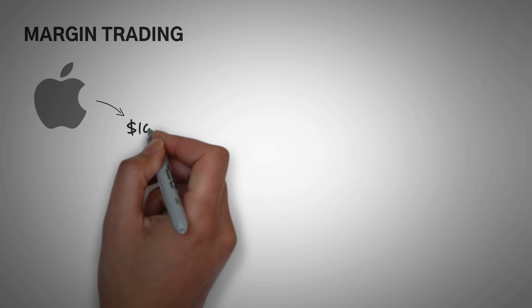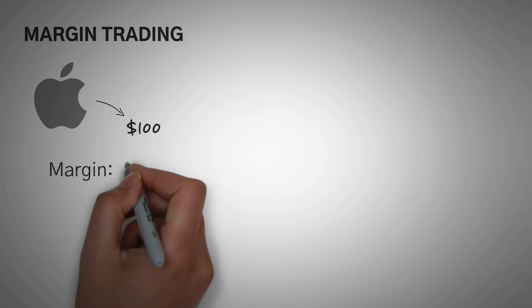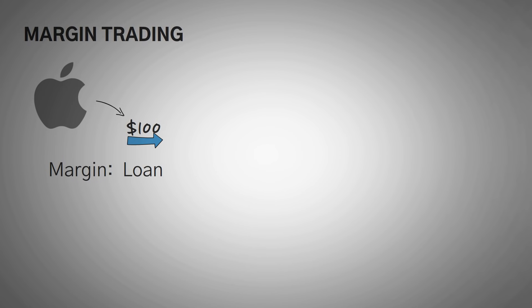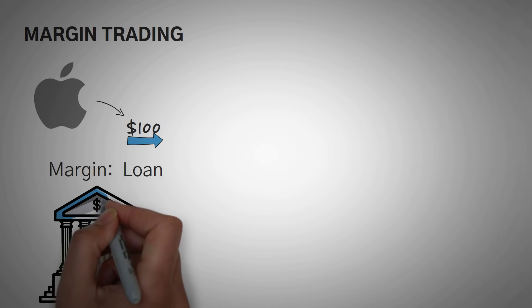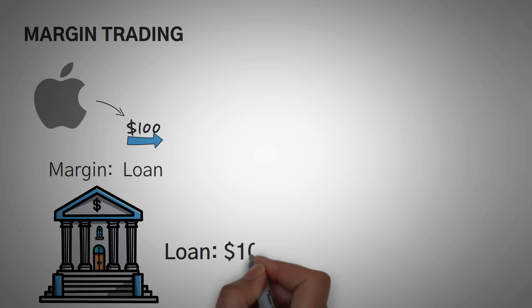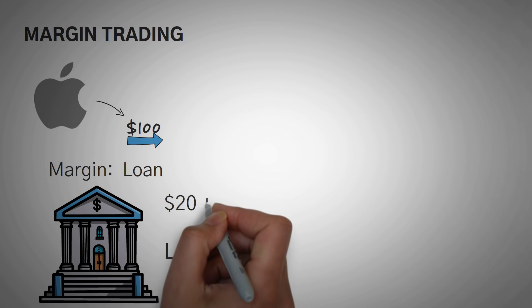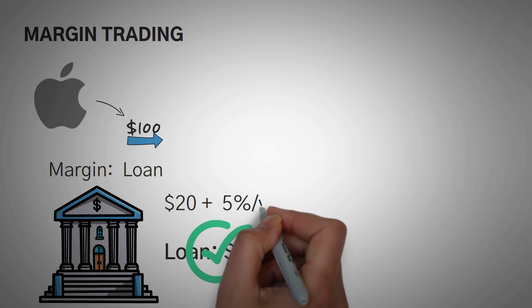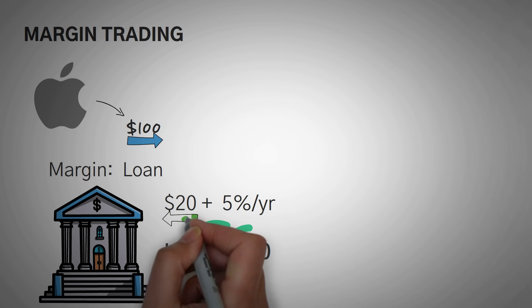So essentially what margin is, is it is a loan that will automatically sell your stock if the stock goes below your down payment. So to buy a $100 stock, you need a $100 loan. And the bank agrees to give you that $100 loan if you can give them a $20 down payment and a small fee of 5% a year. So here's two scenarios that could happen.